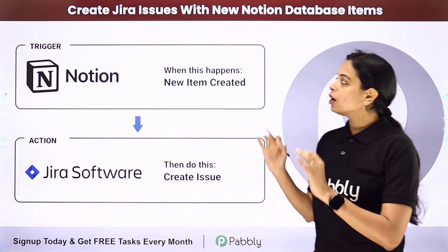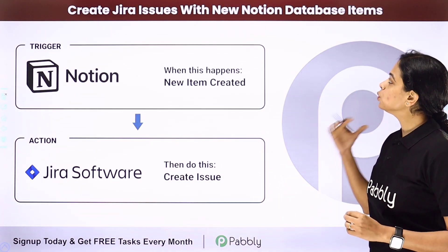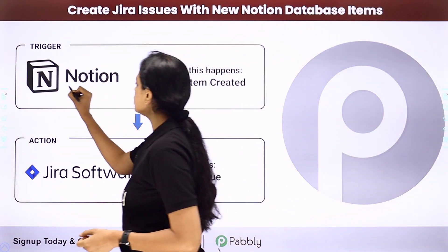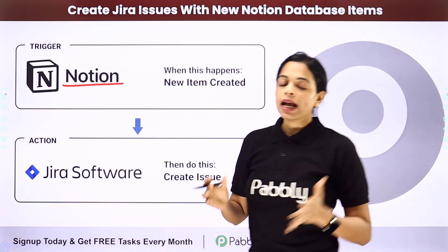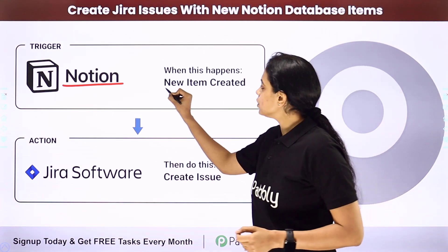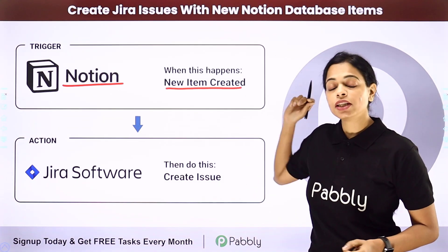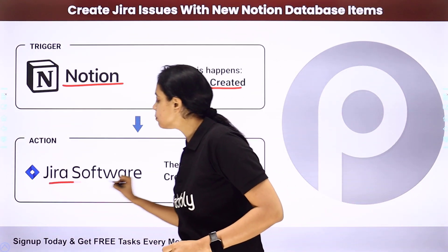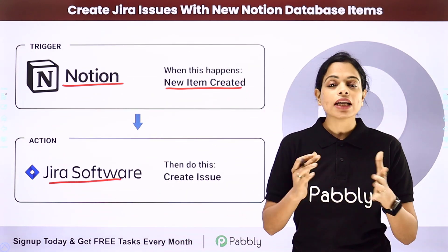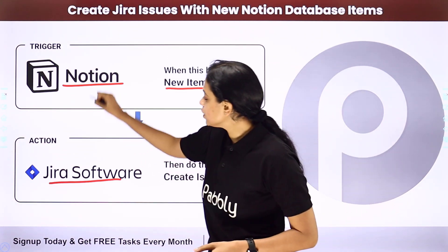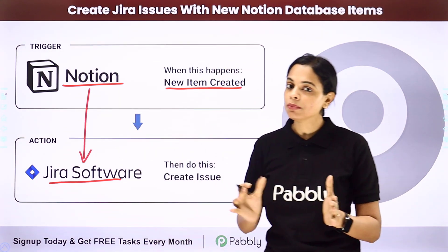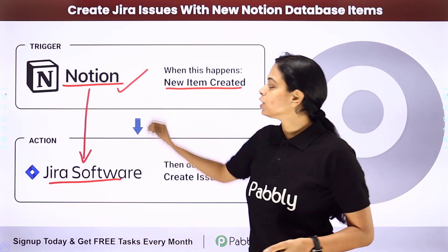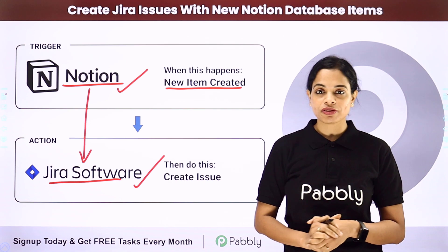In this video, we are going to see how to create Jira issues with new Notion database items. Notion is a note-taking platform, and every time a new database item is created, you want to create an issue in Jira software, which is a project management software. To integrate the two applications, we can use Pabbly Connect software, where the trigger application would be Notion and the action application would be Jira software.